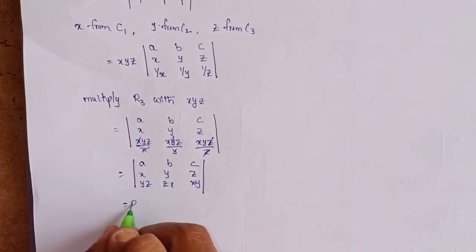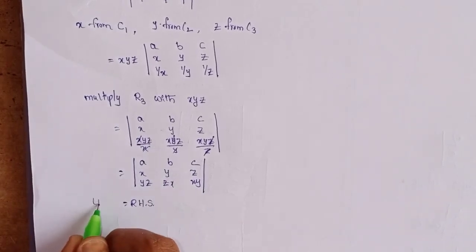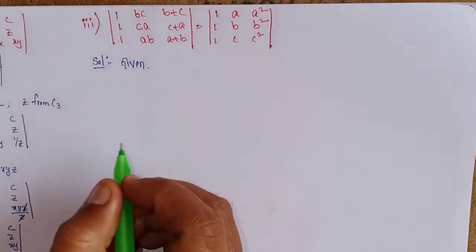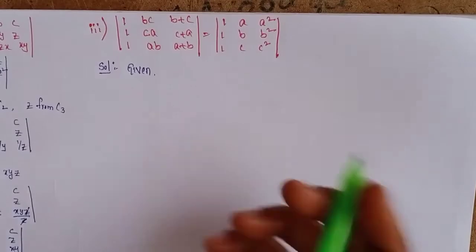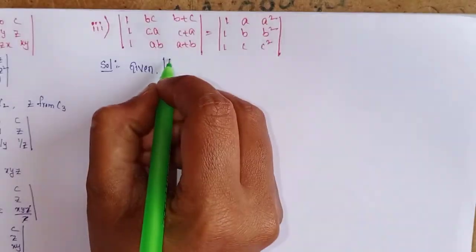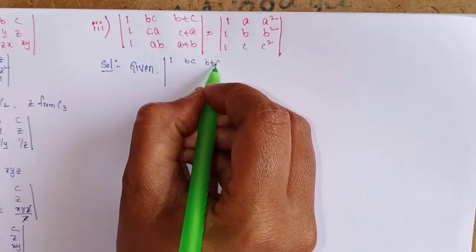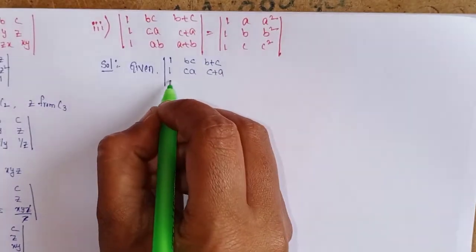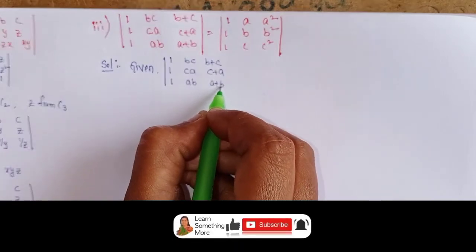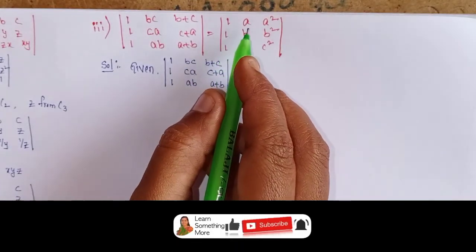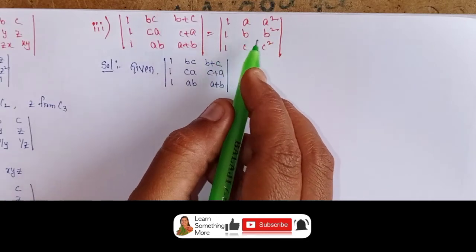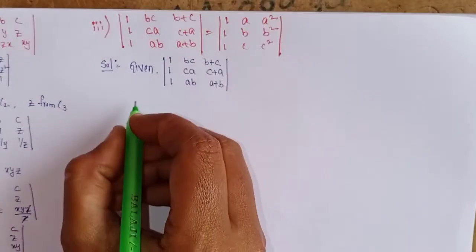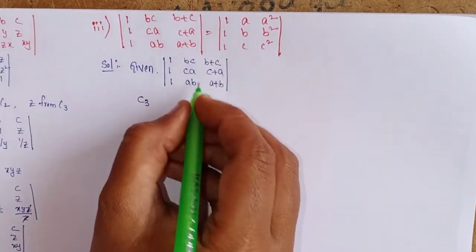LHS equals RHS. Problem 2 complete. Next, problem 3: determinant of [1, b, c, b+c; 1, c, a, c+a; 1, a, b, a+b] — prove this equals determinant of [1, a, a²; 1, b, b²; 1, c, c²].